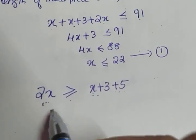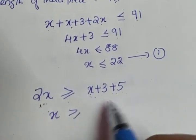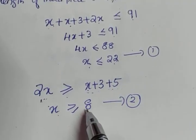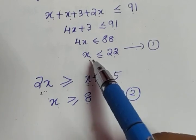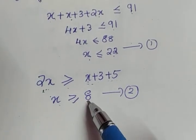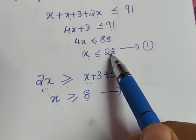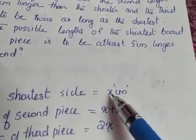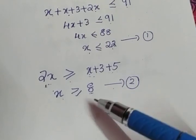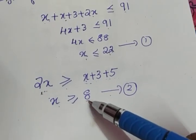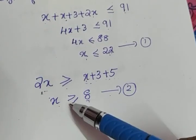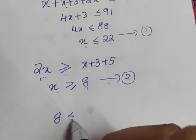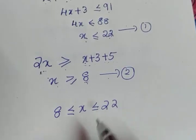Taking x to the left side: 2x minus x gives x, so x is greater than or equal to 8. We now have two conditions: x less than or equal to 22 and x greater than or equal to 8. The minimum value x can take is 8 and the maximum value is 22. Therefore the range of the shortest board length is 8 less than or equal to x less than or equal to 22.